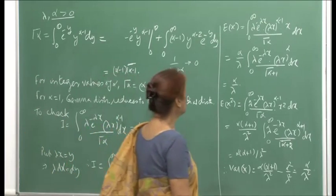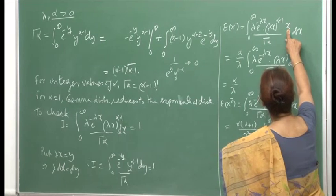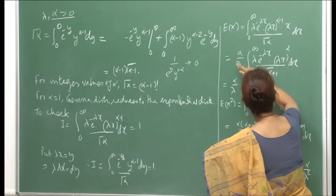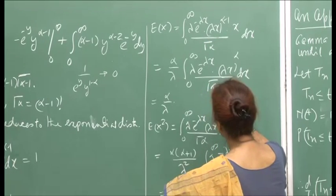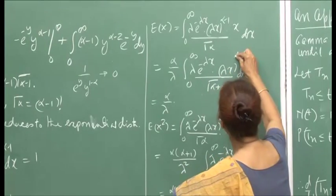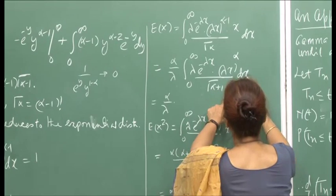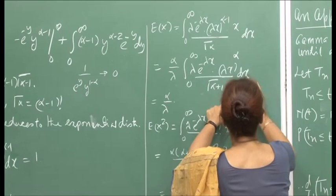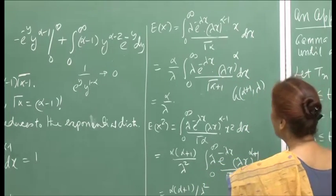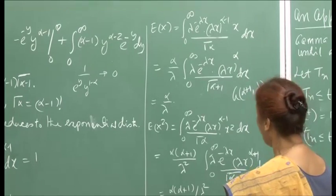For the expectation of a gamma(alpha, lambda) random variable, multiplying the PDF by x and integrating, then manipulating by multiplying and dividing by lambda and alpha, the integrand becomes a gamma(alpha+1, lambda) PDF, which integrates to 1. The expected value equals alpha upon lambda.